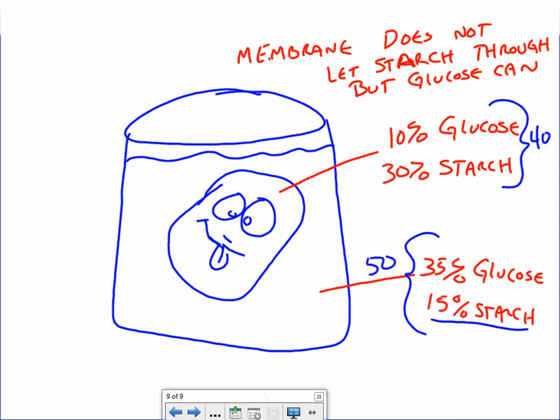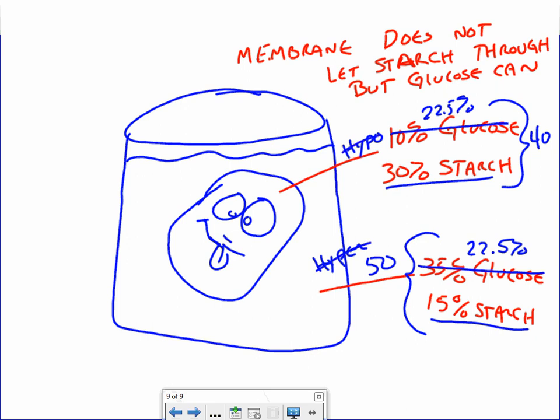Even though starch isn't moving — which is super important for osmosis — the outside is hyper and the inside is hypo. But glucose is going to move, so glucose balances itself out via diffusion. Half of 45 total glucose is 22.5%, so eventually glucose is 22.5% in both spots. Now starch can't move, so water has to work to balance that out. Since there's more starch inside the cell than outside, the outside of the cell overall becomes hypo and the inside becomes hyper, so water actually starts rushing into the cell and this individual is going to expand and possibly explode.